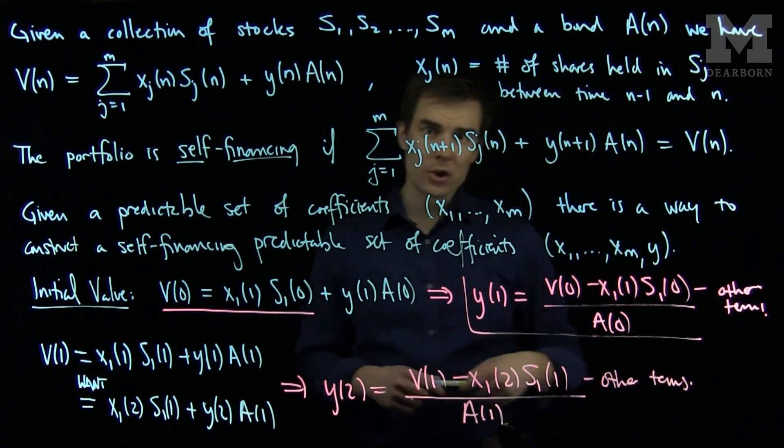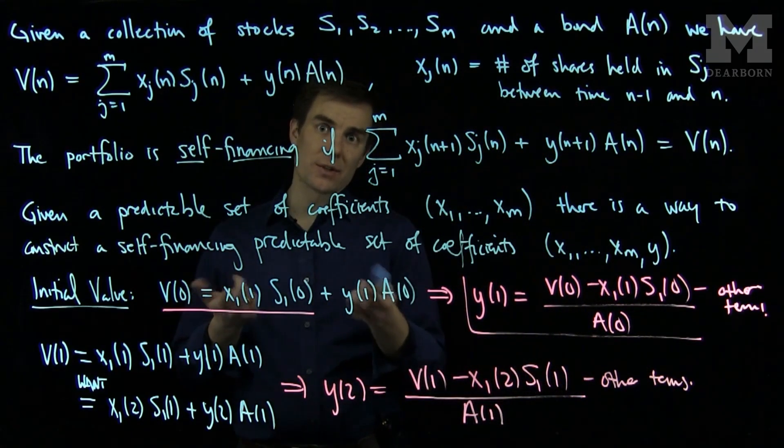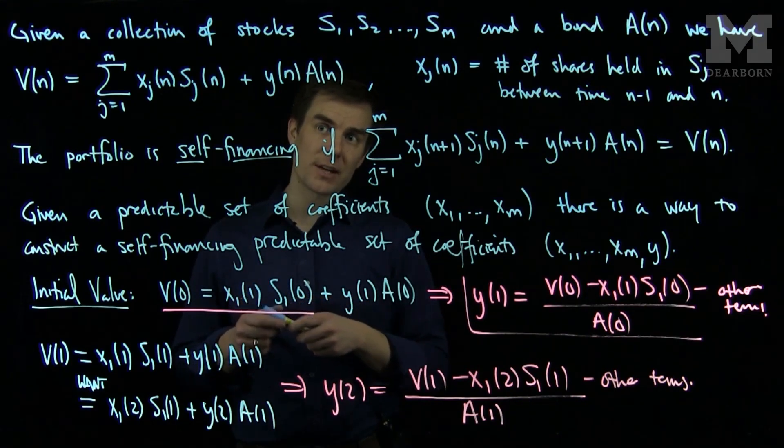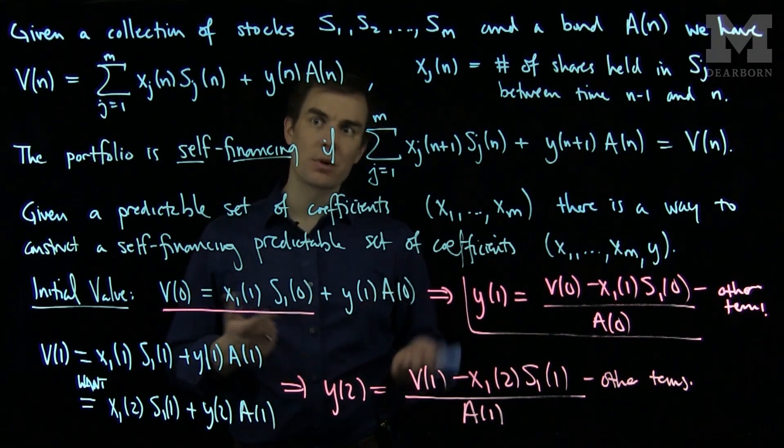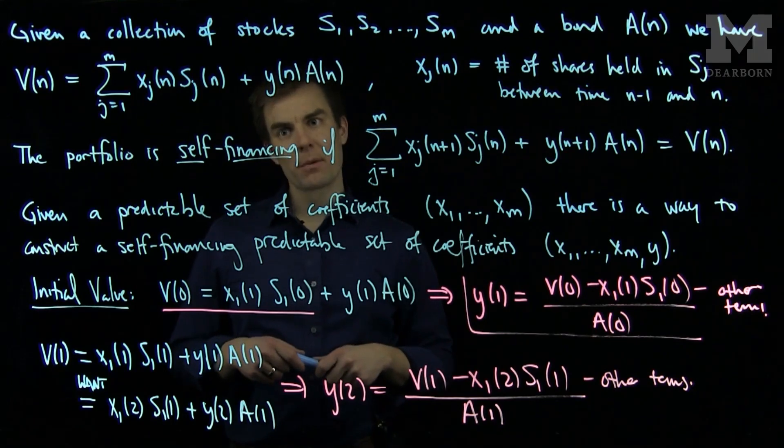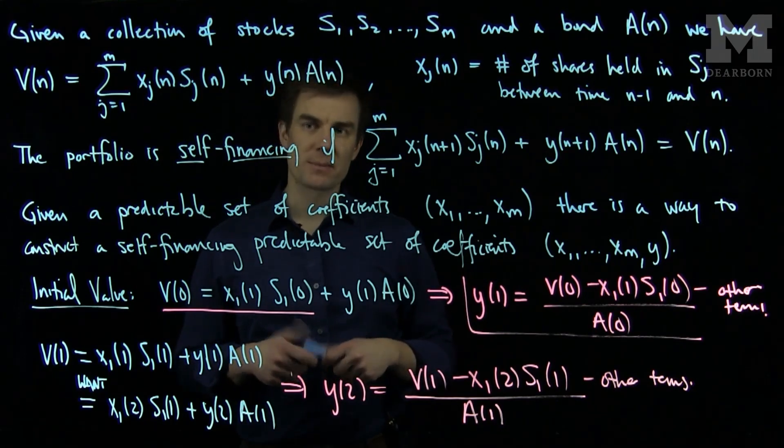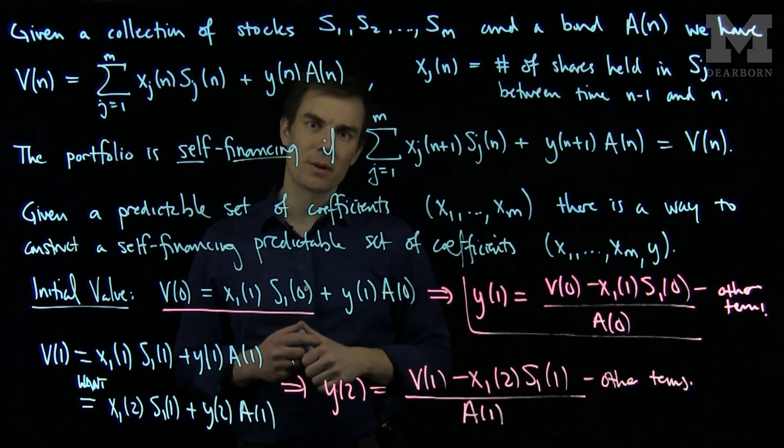So at every step in the iteration we write down the condition which tells us what a portfolio is self-financing and use that together with the previous value of the portfolio to find the number of bonds that you should invest to self-finance a predictable strategy. Thank you very much.